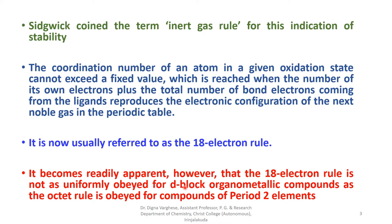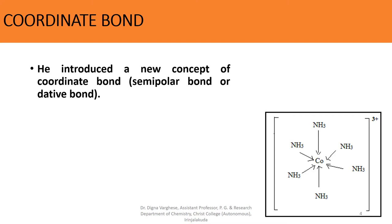It becomes readily apparent, however, that the 18-electron rule is not as uniformly obeyed for d-block or transition metal compounds as the octet rule is completely obeyed for the compounds of period 2 elements.